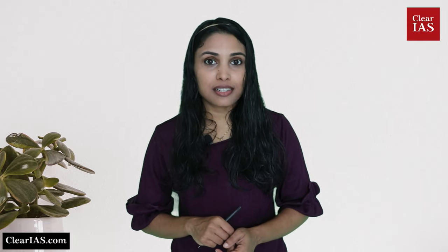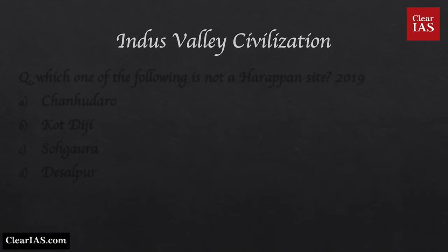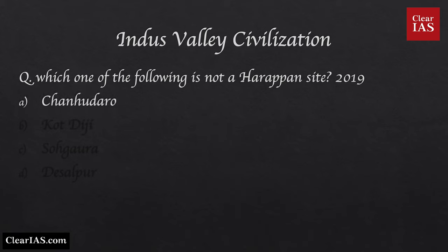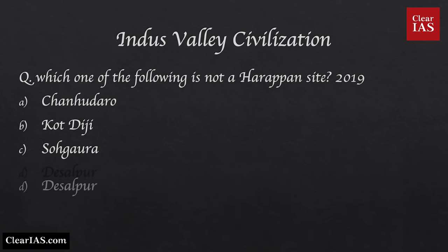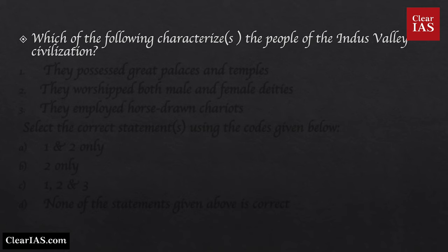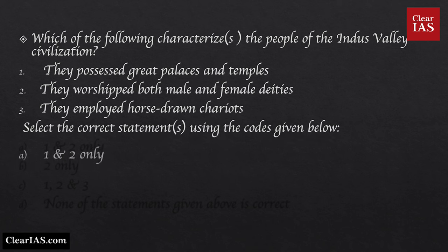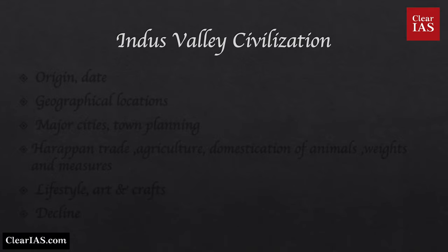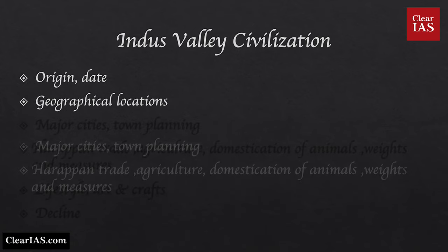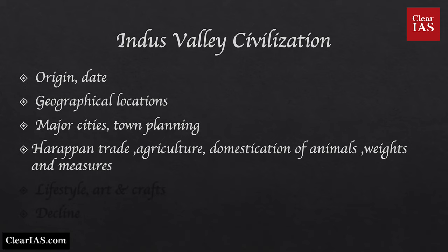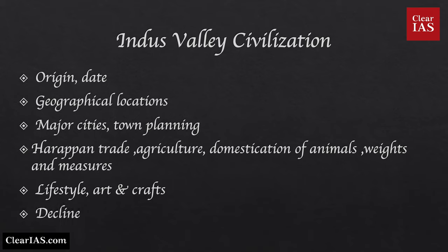Next is Harappan civilization — its historical aspects are also important for Prelims. Sample questions: Which one of the following is not a Harappan site? Options: Chanhudaro, Kot Diji, Sogawra, Desalpur. Which of the following characterizes people of Indus Valley civilization? — They possessed great palaces and temples; they worshipped both male and female deities; they employed horse-drawn chariots. Under this topic, learn about origin and date, geographical locations, major cities, town planning, Harappan trade, agriculture, domestication of animals, weights and measures, lifestyle, art and crafts, economy, and causes for the decline of Harappan culture.